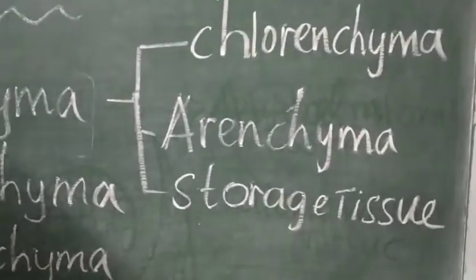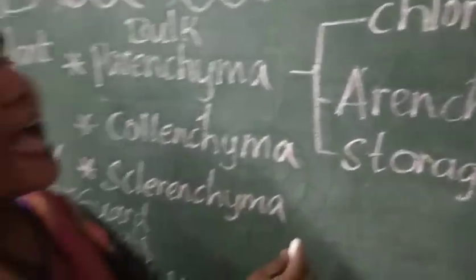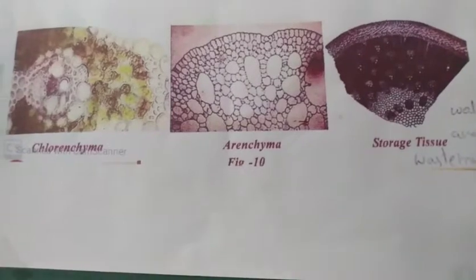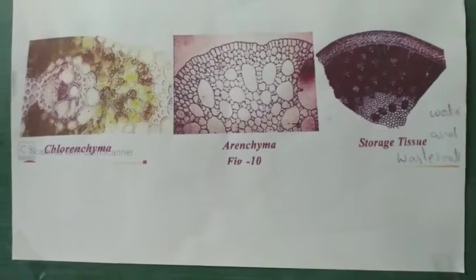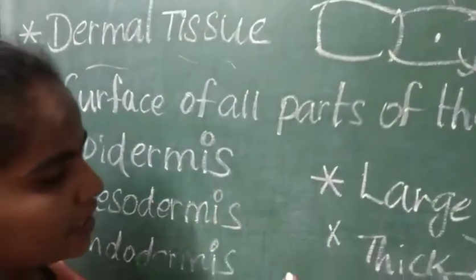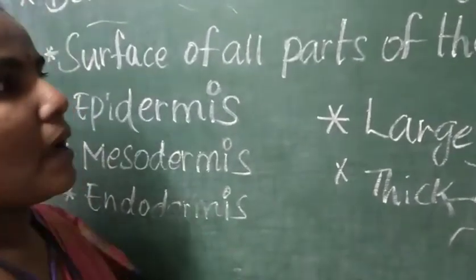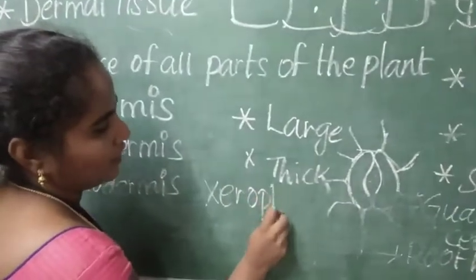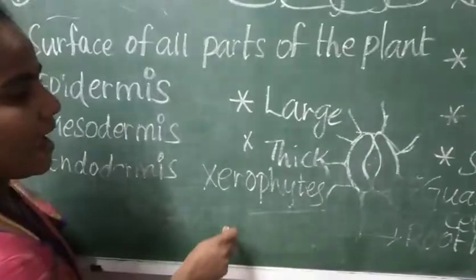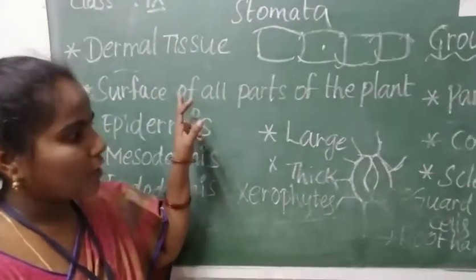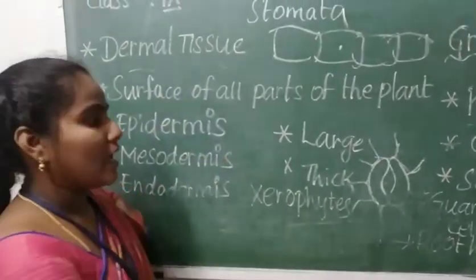Some parenchyma cells have the capacity to store food and waste materials, so they are called storage tissue. The dermal tissue also has one more feature: in xerophytes — plants which live in deserts — the dermal tissue is still thicker in order to protect the inner parts of the plant.